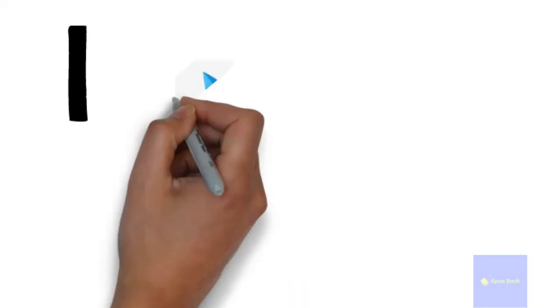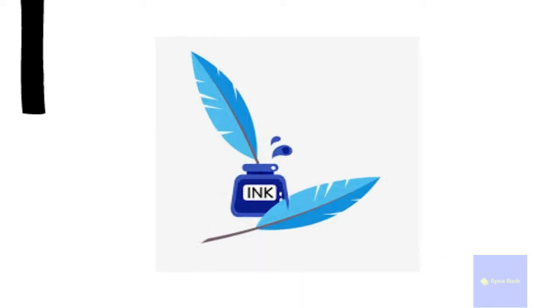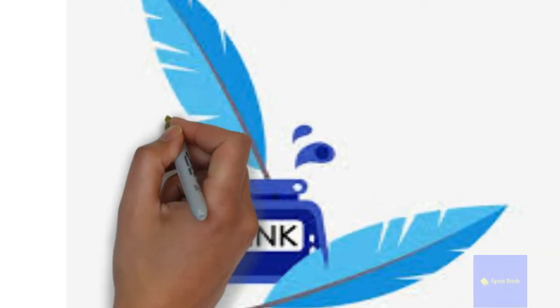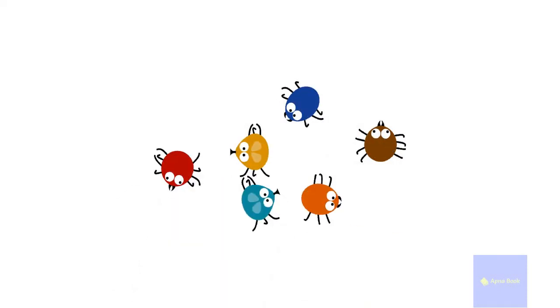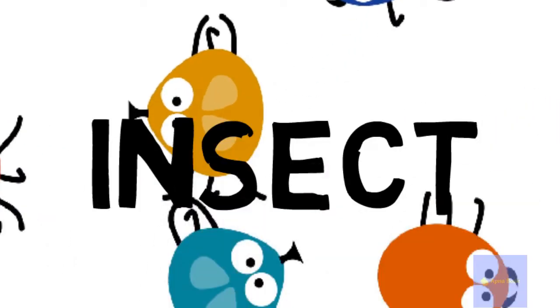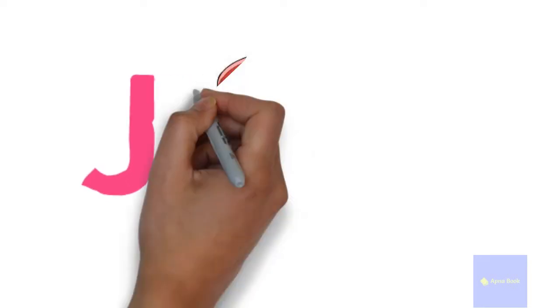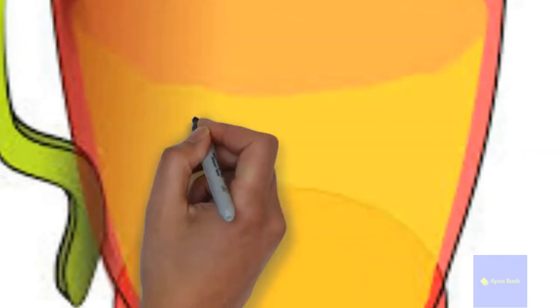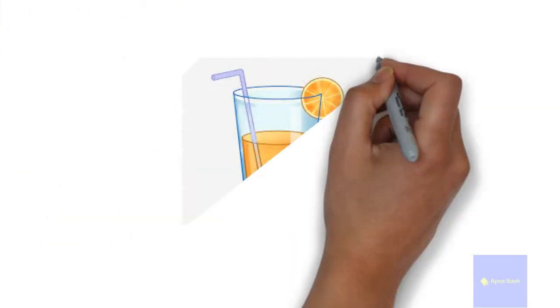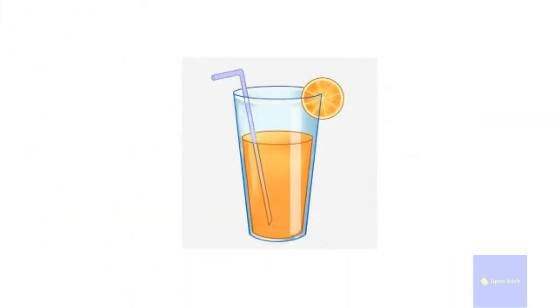I for ink, I for insect. J for jug, J for juice.